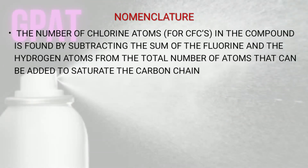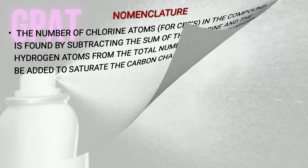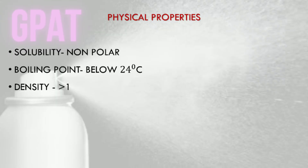For chlorofluorocarbons, the number of chlorine atoms in the compound is found by subtracting the sum of the fluorine and hydrogen atoms from the total number of atoms that can be added to saturate the carbon chain. Regarding the physical properties of propellants: they are generally non-polar, the boiling point is below 24 degrees Celsius, and density is less than 1.